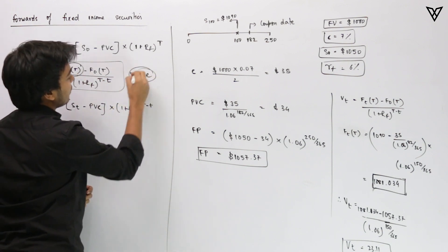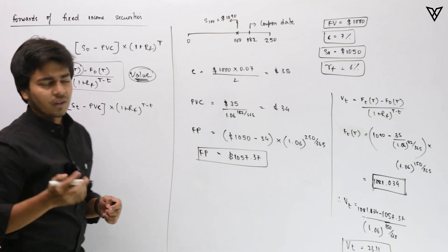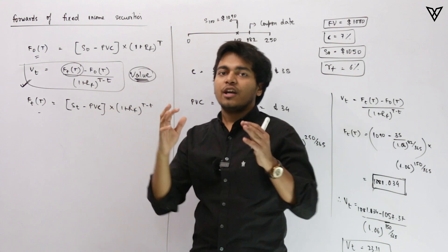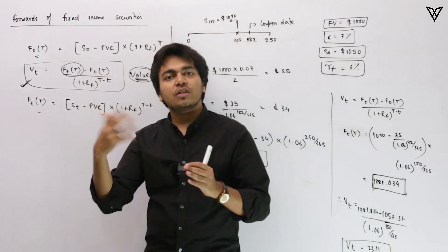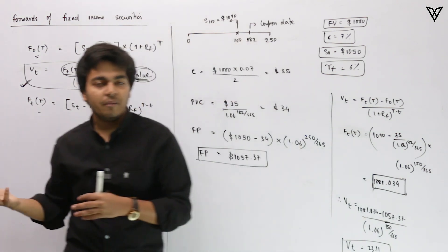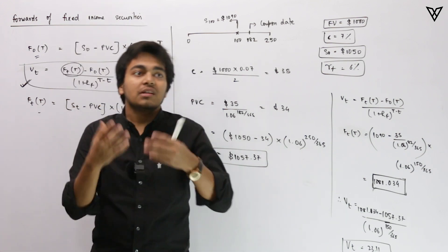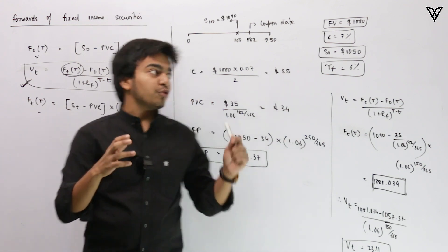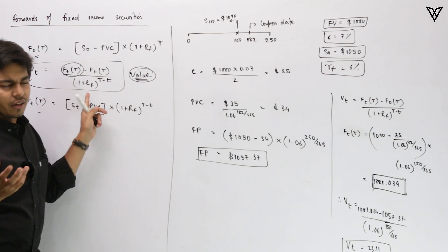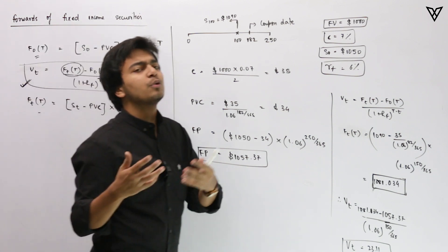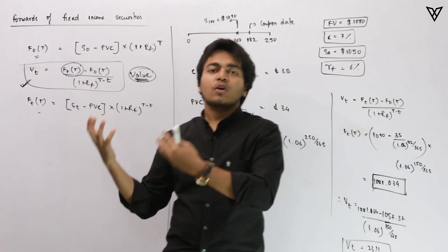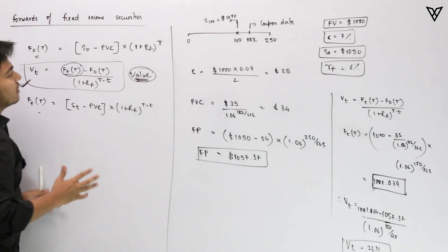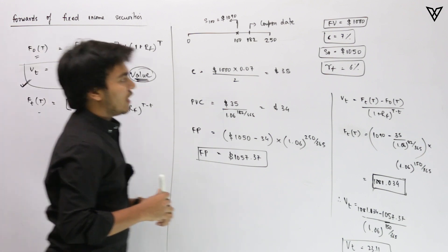I particularly prefer this formula over the one in the textbooks — though the textbook does have both. I prefer this approach because it sets a norm for other derivative contracts as well. If you stick to this formula — new minus old divided by the risk-free rate — you'll be able to apply it across many other derivative contracts. Now, let's look at the question we have.